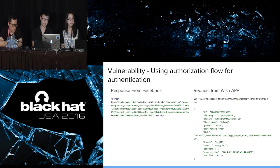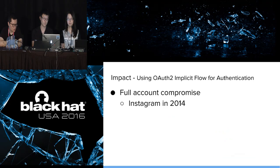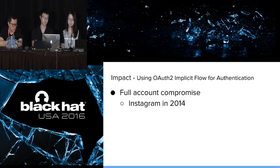In the response, you can see the ID used to identify who the user is in the system. In the attack case we described, the attacker can log in to the victim's account. The impact is full account compromise with the relying party app. In the attack we demoed with Wish, but in 2014 we found this vulnerability in a Facebook third-party authentication app called Swamp. At that time, there was a vulnerability allowing full account compromise in Swamp.